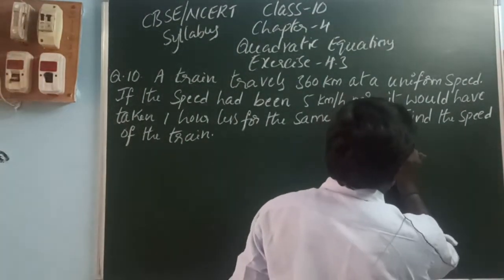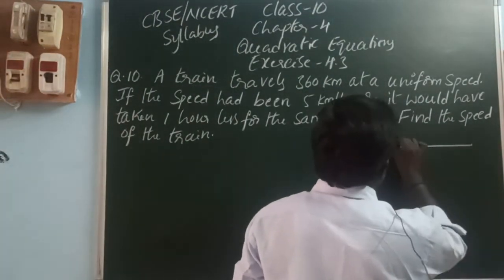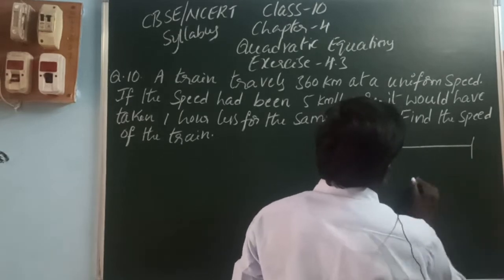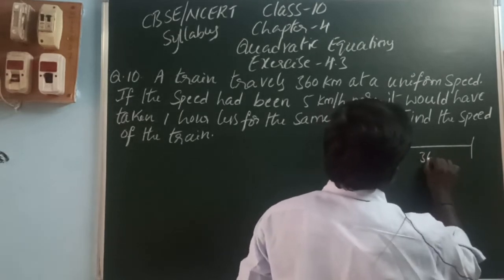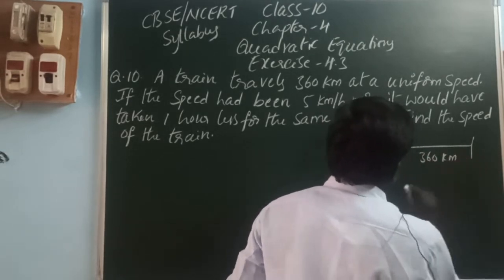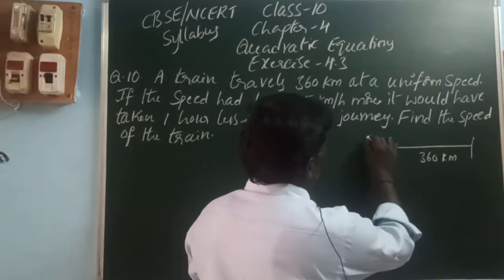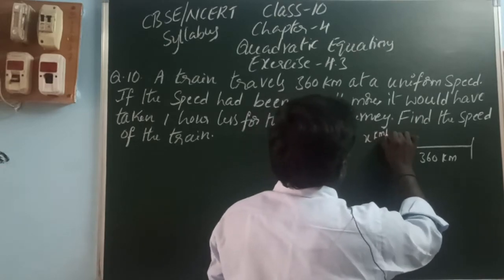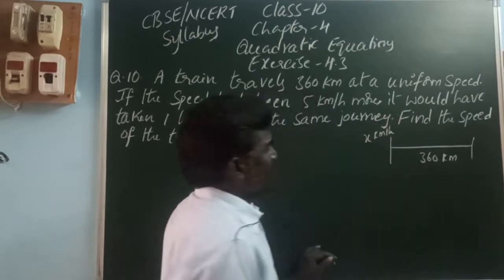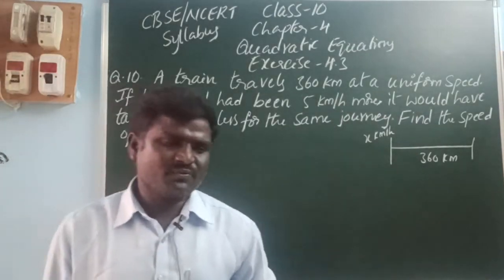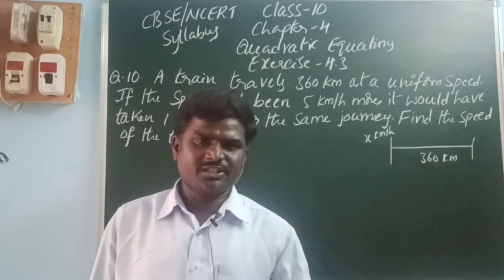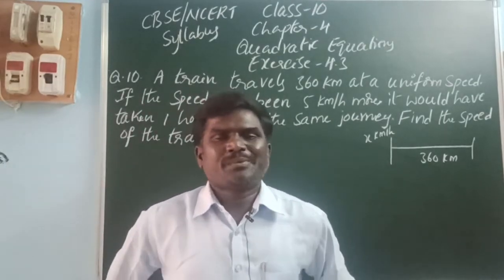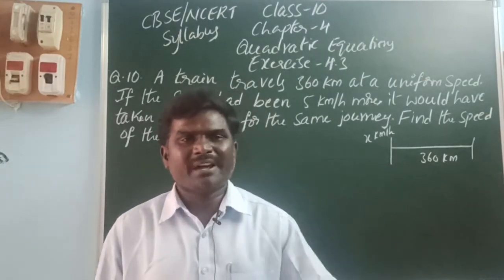Here a train is moving from one place to another place. The distance is 360 km. The speed of the train is x km per hour. Here we know the relation between speed, distance, and time. Speed is equal to distance divided by time.